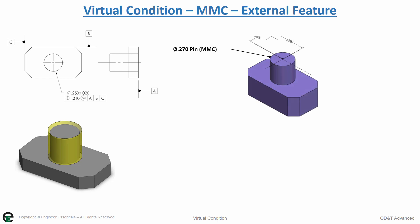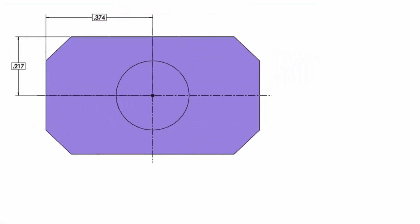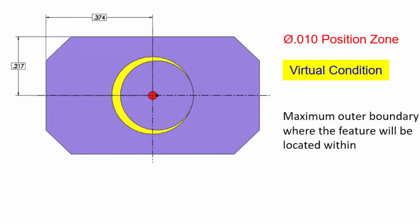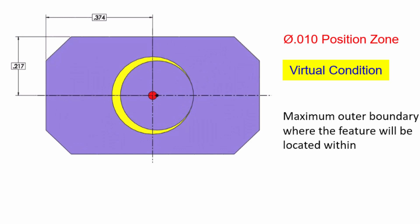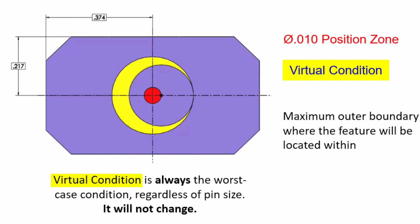It's calculated in a similar way as an internal feature, only now it's the opposite condition. What we have is a limit of size around the outer boundary, with a .010 positional tolerance zone, and the yellow represents our virtual condition. Now with the pin at its MMC, you can see that it cannot go outside the extents of this yellow boundary. When the pin gets smaller, it's allowed more position outside of that, but it's still maintained within the virtual condition boundary.